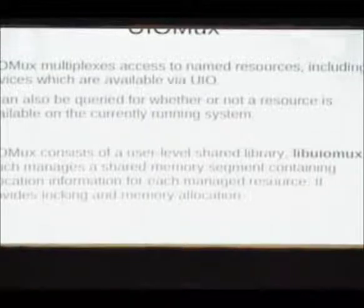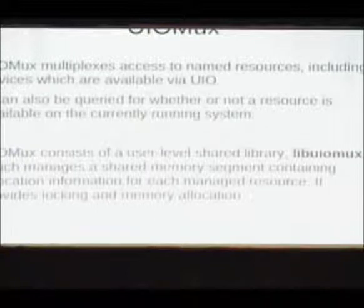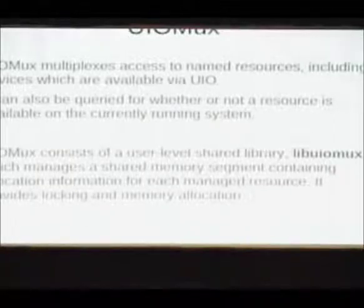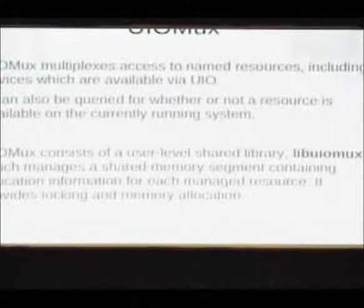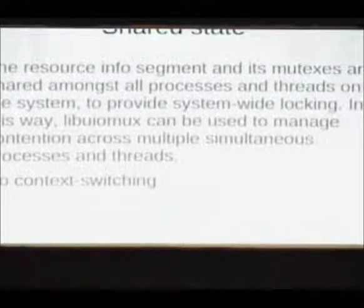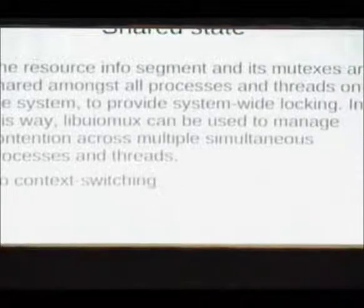UIOmux is a user level library. You can basically say here's the name, I want access to this named resource, give me some memory out of it. It manages a shared memory segment shared amongst all processes, but there's no UIOmux daemon running. The way it differs from something like D-Bus is that it has this shared state — it's just a library you link against, you can find that shared state and manipulate it in a way that is guaranteed to be atomic. So you can get system-wide locking and manage contention.